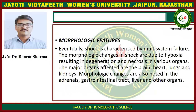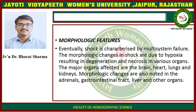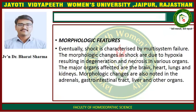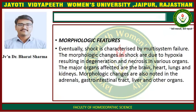Morphological features. Eventually, shock is characterized by multi-system failure. The morphologic changes in shock are due to hypoxia resulting in degeneration and necrosis in various organs. The major organs affected are the brain, heart, lung, and kidney, while morphological changes are also noted in the adrenal glands, gastrointestinal tract, liver, and other organs.